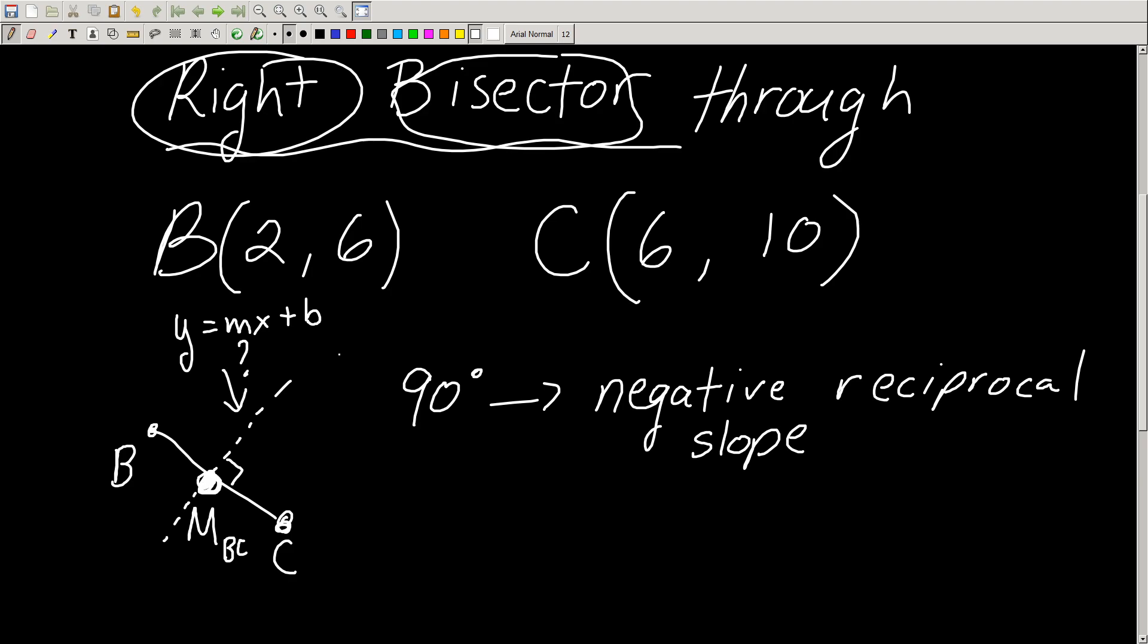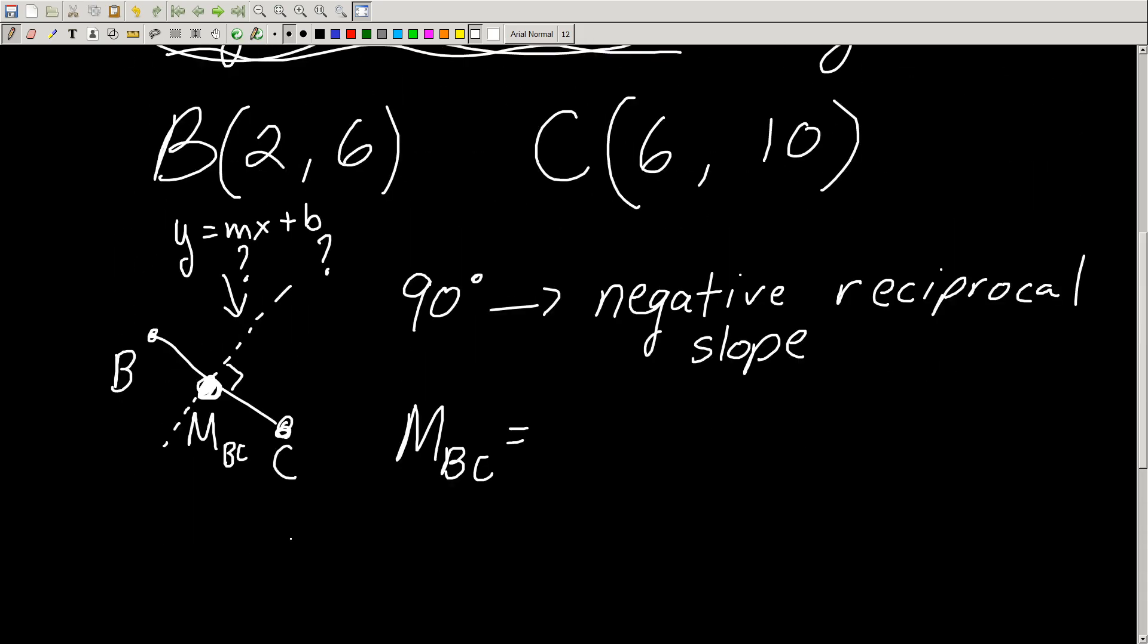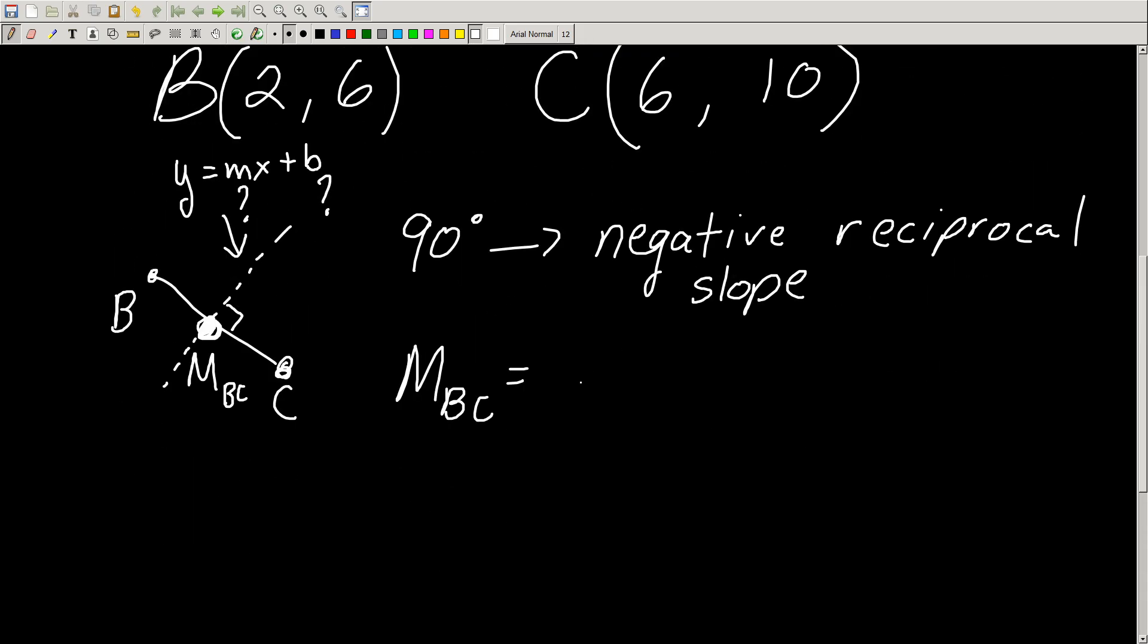We need a slope and a y-intercept. So first things first, we're going to find the midpoint of BC. Then what we're going to do is we're going to find the slope of BC, and then we're going to take the negative reciprocal of BC.